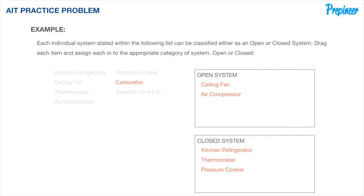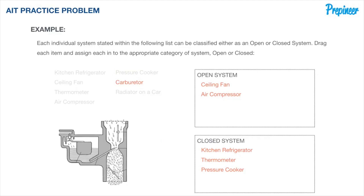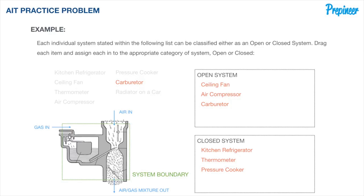Now, what about a carburetor? There is a typical carburetor with the system boundaries shown. The carburetor takes in gas and air, and exerts them as an air-gas mixture. Therefore, it is considered an open system.